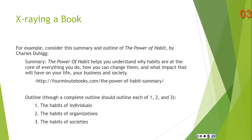For example, consider this summary and outline of The Power of Habit by Charles Duhigg — a book I recommend. Summary: The Power of Habit helps you understand why habits are at the core of everything you do, how you can change them, and what impact that will have on your life, your business, and society. Then the outline — though a complete outline should detail each part — you've got the habits of individuals, the habits of organizations, and the habits of societies. I came up with that outline just by looking at the table of contents. To do a very complete and detailed outline, you'll need to read the book at least at an inspectional level.